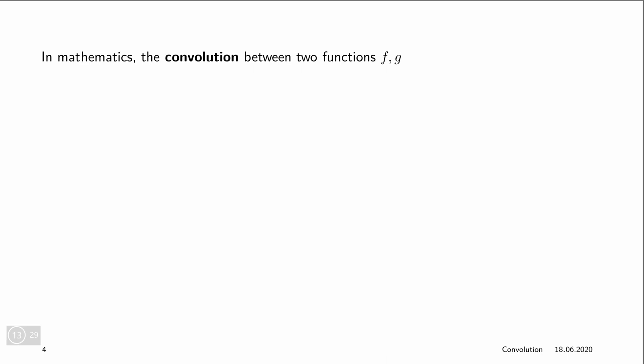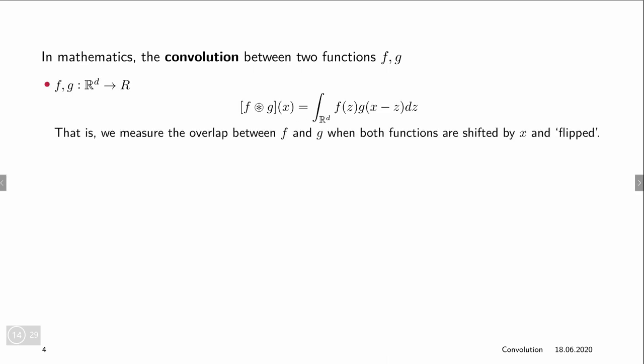It's called convolutional layer because it's similar to the mathematical operation convolution. So what convolution does, it takes two functions f and g and typically you see it in the continuous case, so it's denoted with this star in a circle. So f convolved with g at x equals the integral over the domain of f over z and g of x minus z. So we basically take the overlap of f and g shifted by x and flipped.